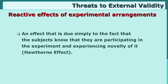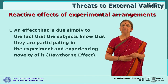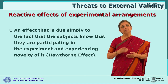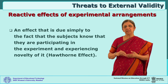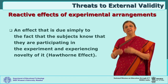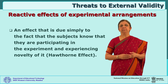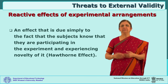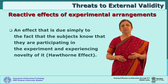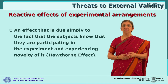One more threat to external validity is called Reactive Effects of Experimental Arrangements. Your subjects know that they are included in an experiment — it is a novelty for them. They are enthusiastic, and that is why reading comprehension scores are increasing. Is it because of your independent variable, your program, or because of this novelty effect — the subjects' understanding that they are part of an experiment? Would you get the same effects when this novelty is not there? This is called the Hawthorne effect.